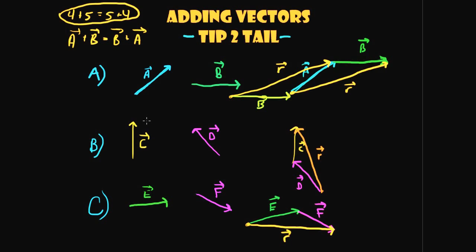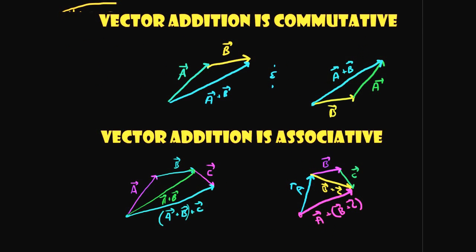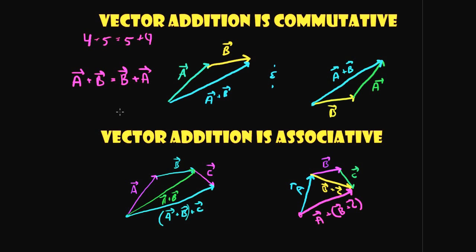Vector addition is commutative. If you add vector A plus vector B you get A plus B, and if you add vector B plus vector A you still get the same result — just like 4 plus 5 equals 5 plus 4 in arithmetic. In vector notation, taking vector A and adding it to vector B is the same as taking vector B and adding it to vector A. They follow that very basic arithmetic law.